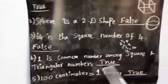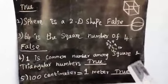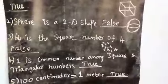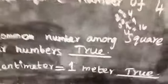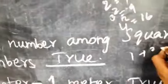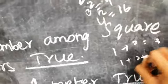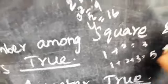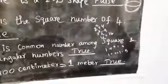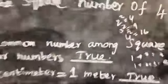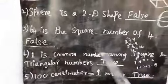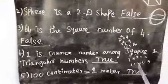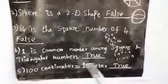Fourth statement: one is a common number among square numbers and triangular numbers. One squared comes to answer one. And for triangular numbers, one equals one, one plus two equals three, one plus two plus three equals six, and so on. So the triangular numbers are one, three, six, likewise. One appears in both square numbers and triangular numbers. So the statement is true.